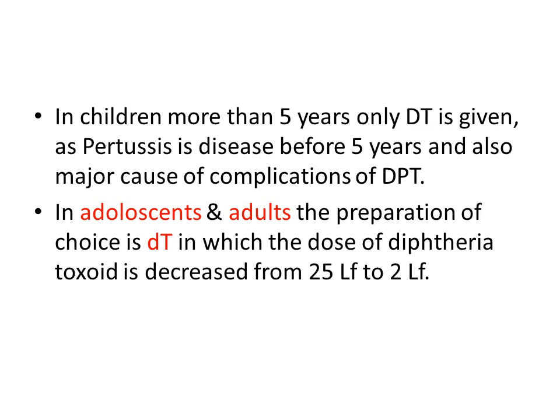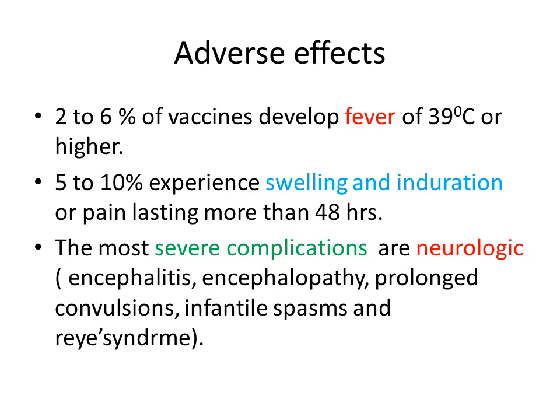In adolescents and adults, the preparation of choice is small DT. Small DT means the diphtheria toxoid dosage is decreased — from 25 LF down to 2 LF. So it is called small DT, and this is the preparation of choice for adolescents and adults.